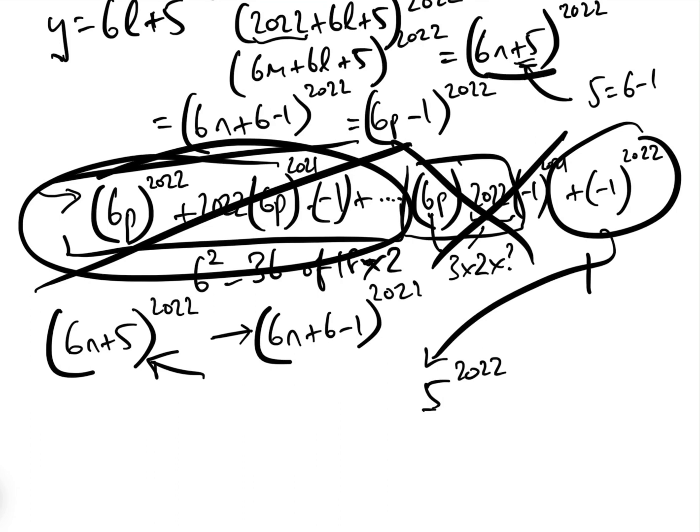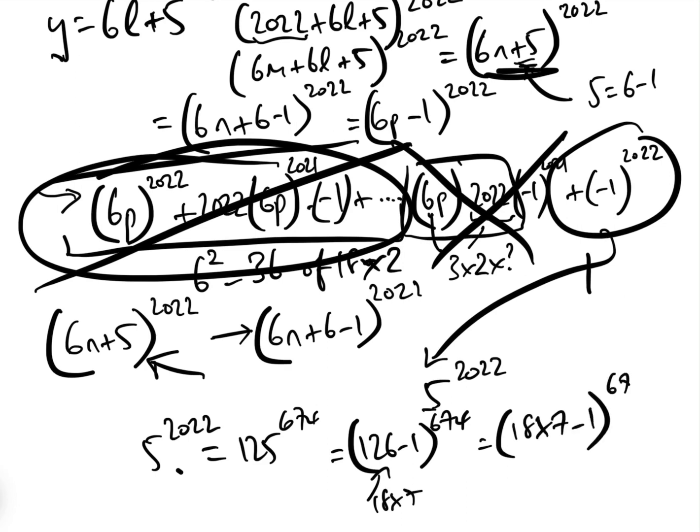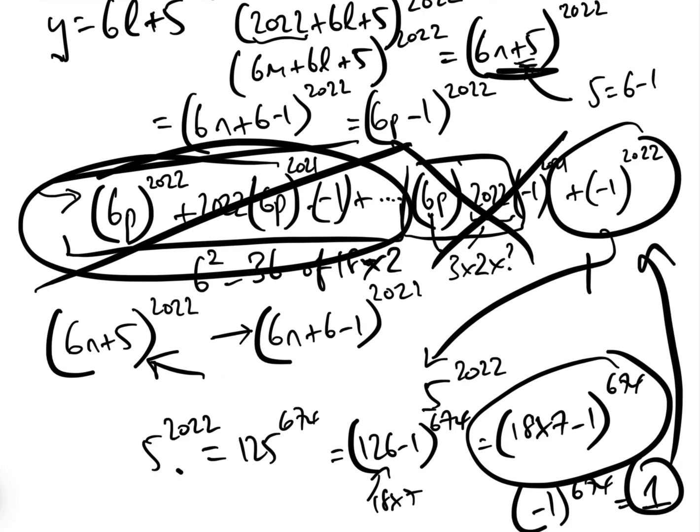Well, all we need to do in that case, if you've forgotten - and again, it's much better to do it this way - but if you had forgotten or didn't see it, we could see that 5^2022 is equal to 125^674. 125 is 5^3. And 125 is equal to (126 - 1)^674. And 126 is 18 × 7, so that gives us (18 × 7 - 1)^674. And then when we expand this out using the binomial theorem, every single term will be a multiple of 18, except the last one, which will be (-1)^674, which equals 1. So again, our remainder is 1.